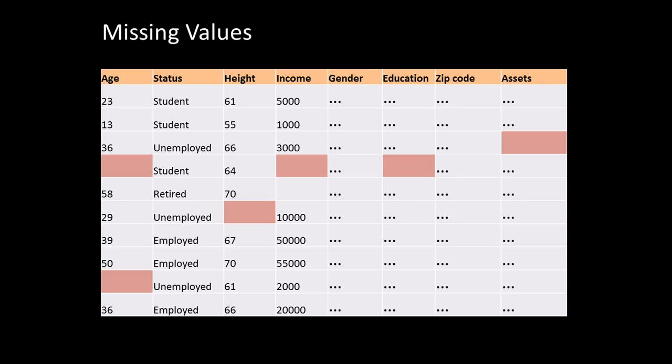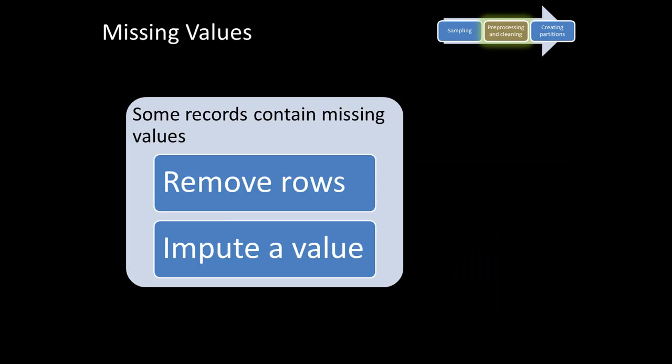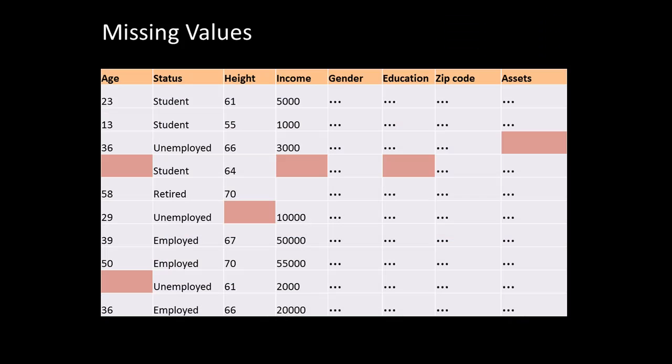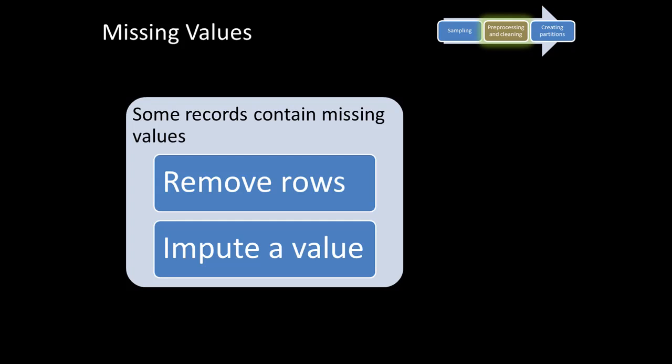How do you deal with missing values? One thing you could do is simply remove the rows — if a particular row has even one missing attribute value, get rid of it. Sometimes you have so much data that you have the luxury of throwing away rows with missing values. But sometimes that may not be an option, because if you remove those rows you might lose a lot of useful information — especially in situations with rare cases, where those cases are already rare and you'd be losing really valuable information.